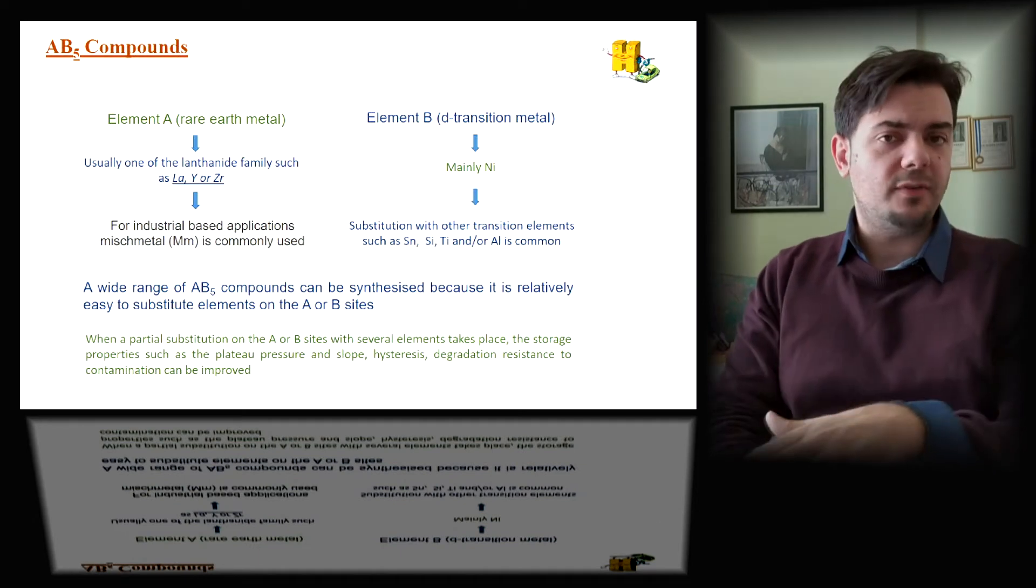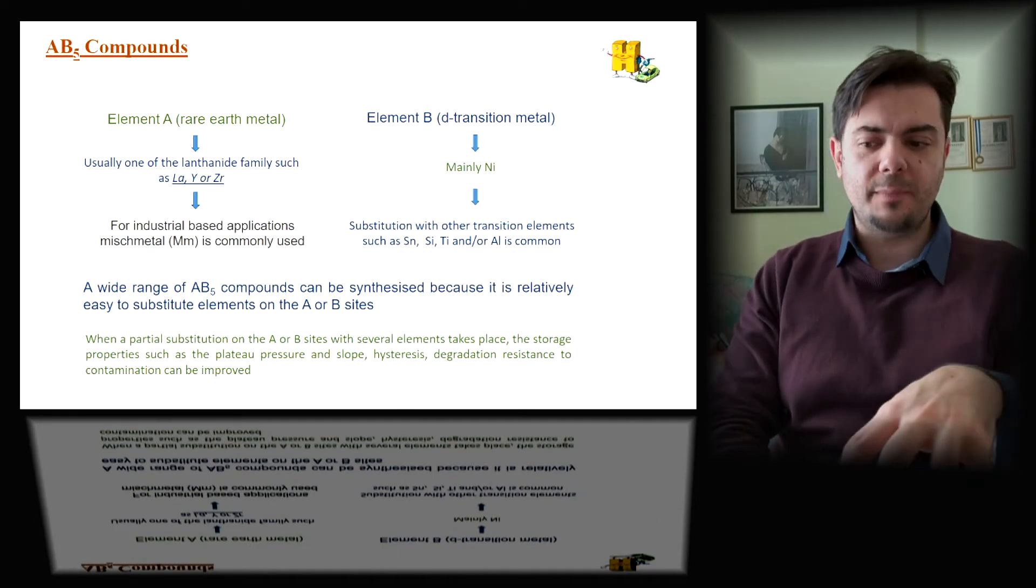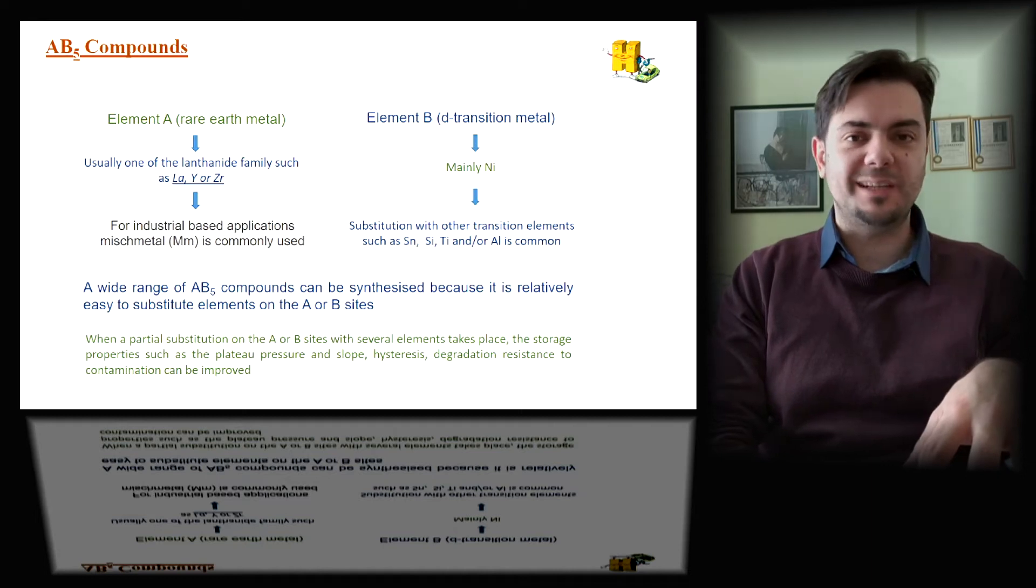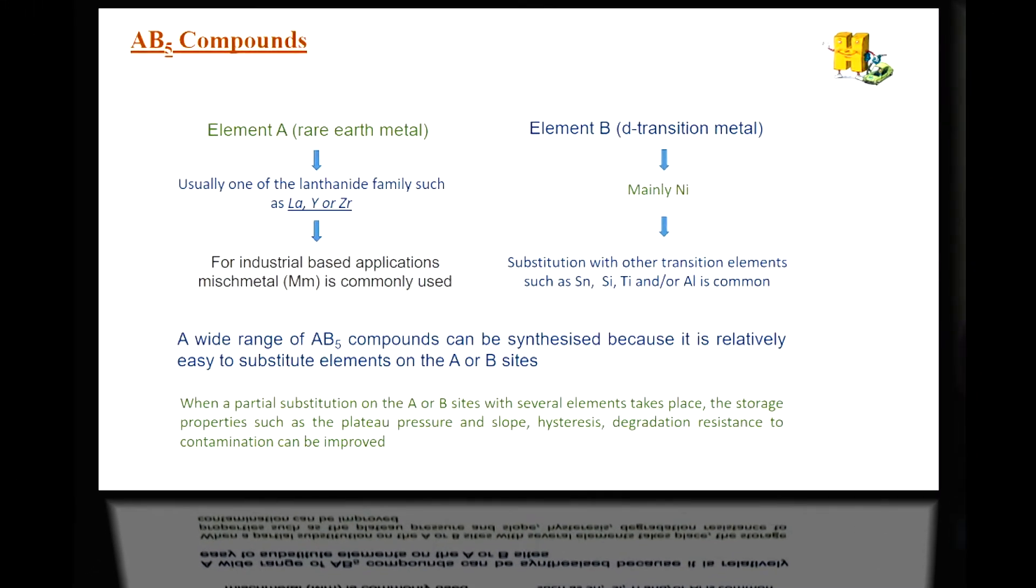Let's start with the AB5 compounds, which are the easiest, I would say, compounds and intermetallics to study. Normally, the A part, the stable hydride, consists of element A, a rare earth element based on lanthanum, sometimes yttrium or zirconium. When it comes to more industrial-based applications, Mish metal is used. Mish metal is a combination of metals mostly based on cerium and lanthanum together. Depending on the application, industry has several stoichiometries and several percentages of those two materials.